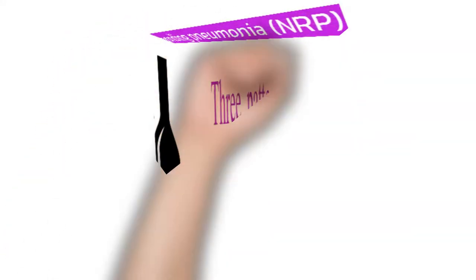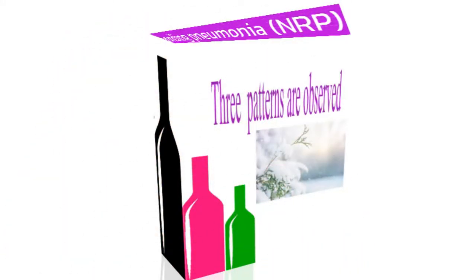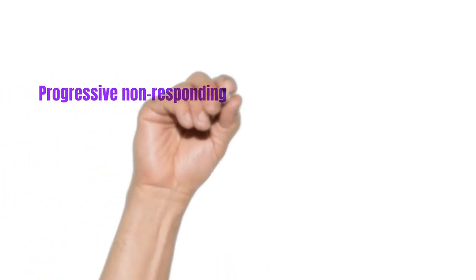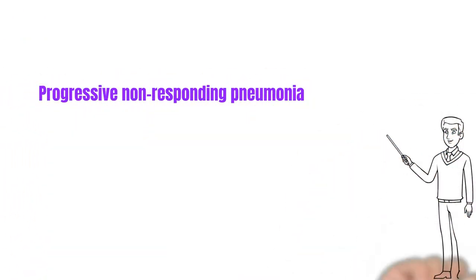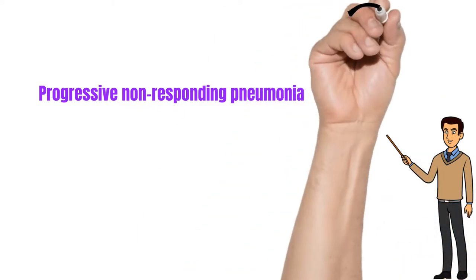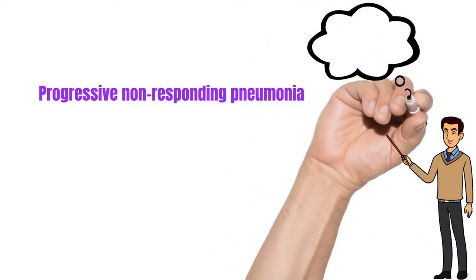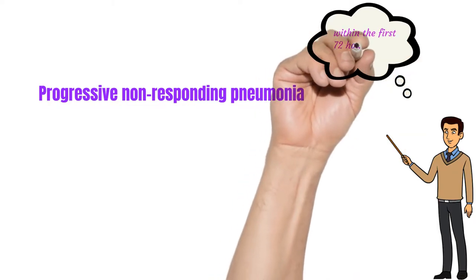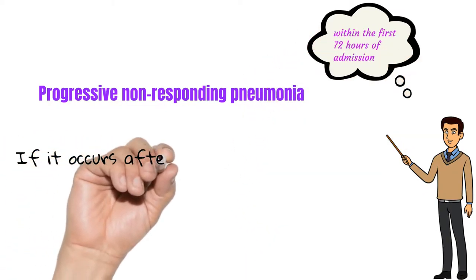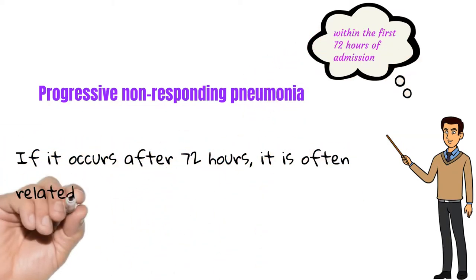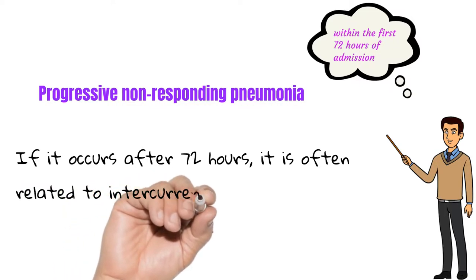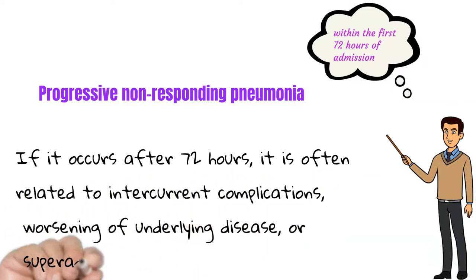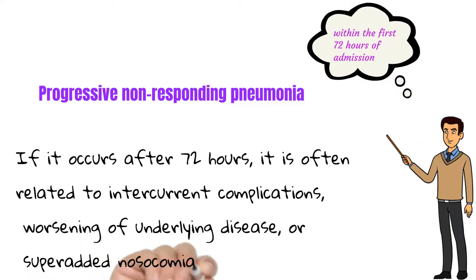Three following patterns are observed in NRP. First, progressive non-responding pneumonia: there is clinical deterioration of the patient leading to acute respiratory failure and/or septic shock within the first 72 hours of admission. If it occurs after 72 hours, it is often related to intercurrent complications, worsening of underlying disease, or superadded nosocomial infection.